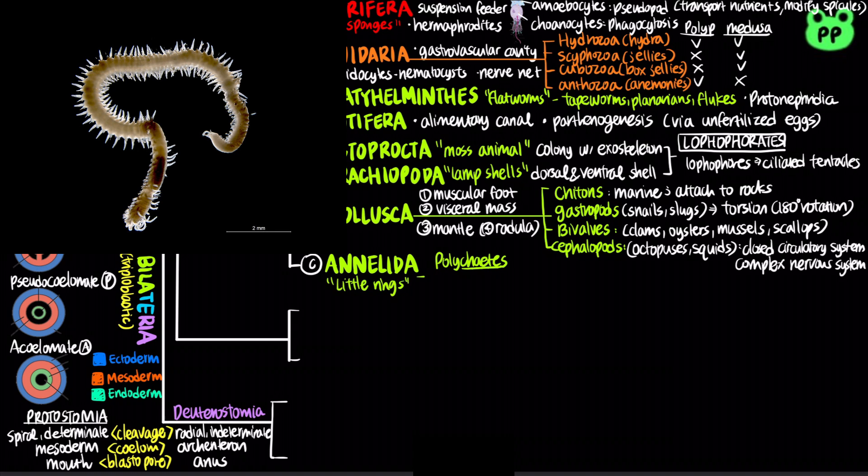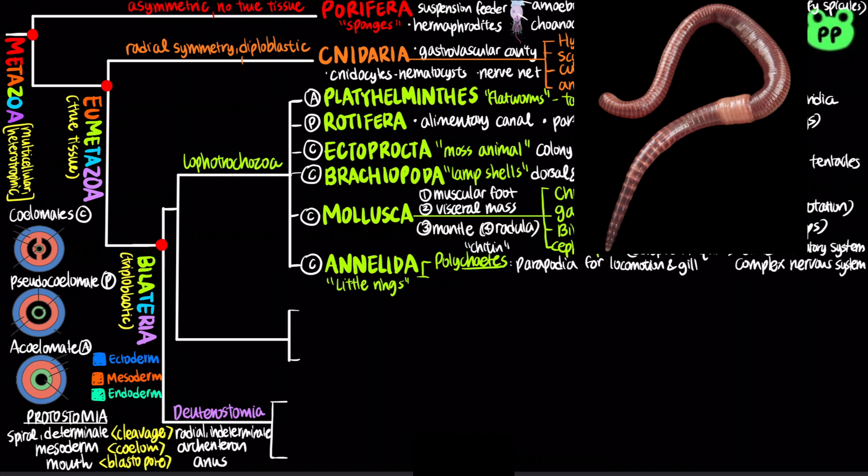Polychaetes have a pair of fleshy protrusions called parapodia that bear many bristles called chaetae, which are made of chitin and function in locomotion and as gills. Oligochaetes are named for their relatively sparse chaetae and include earthworms and a variety of aquatic species.